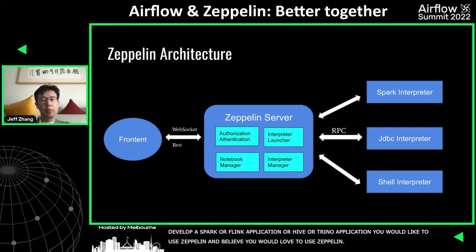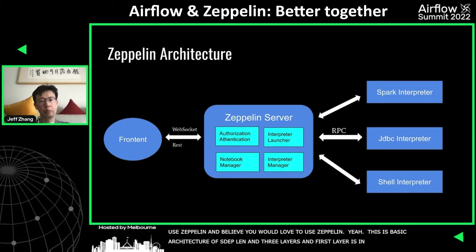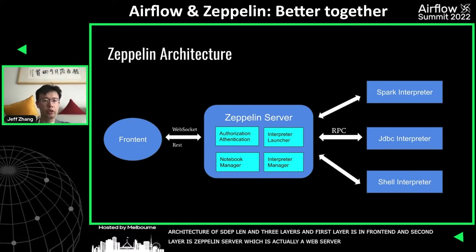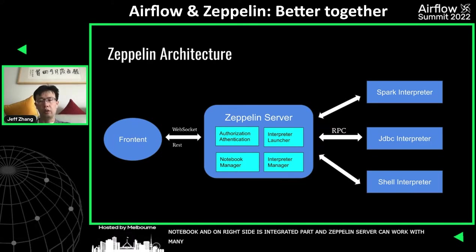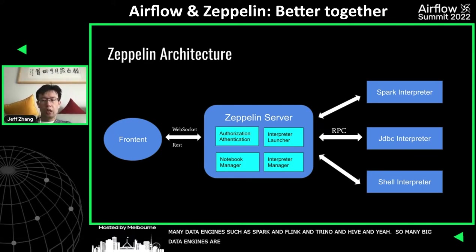This is the basic architecture of Zeppelin. There are three layers. The first layer on the left is the front end. The second layer is the Zeppelin server, which is actually a web server that can manage your interpreter and your notebook. On the right side is the interpreter part. Zeppelin server can work with many big data engines such as Spark, Flink, Trino, Hive, and many more. This architecture is very similar to Jupyter.